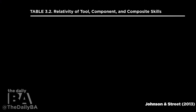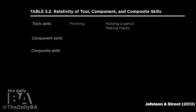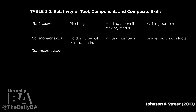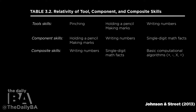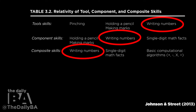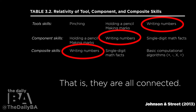Here you see Table 3.2 from Johnson and Street's 2013 book on Precision Teaching. On the left side we have tool skills, component skills, and composite skills. For tool skills: pinching, holding a pencil, making marks, and writing numbers. For component skills, those roll into holding a pencil and making marks, writing numbers, and single-digit math facts. And finally, composite skills: writing numbers, single-digit math facts, and basic computational algorithms. You'll notice that writing numbers appears across all three categories, showing that these are very relative terms.